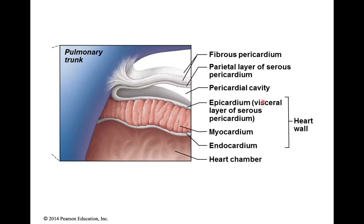Now the heart itself does have layers to it. We're going to talk about the layers of the heart wall, starting from the inside and moving our way to the outside. The inside wall of the heart is made up of a layer of tissue called the endocardium — endo means inside, cardium means heart.